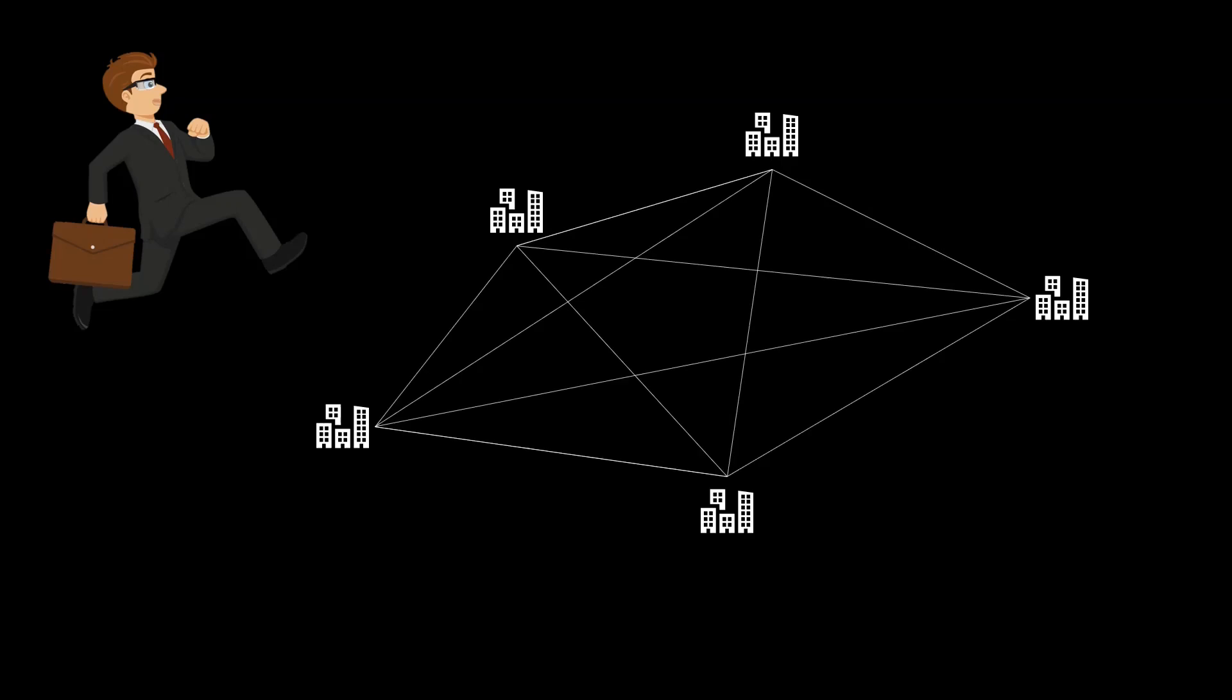We can think of the cities as nodes in a graph. Between any two cities, there is a road of a certain length. In the graph, the roads are represented by edges.